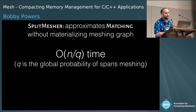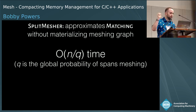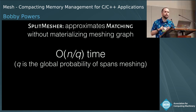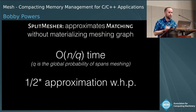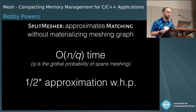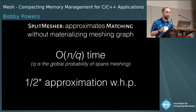We show that this algorithm runs in O(n/q) time — linear with respect to the size of the heap — where q is the global probability that two spans will mesh. We also have proofs in the paper that this is an approximation arbitrarily close to one half of the optimal matching, with high probability.